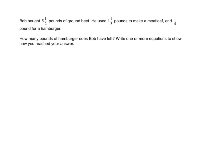We'll start with a tape diagram using the RDW. We've just read it, and now we're going to draw. We know that the whole amount is five and a half. So we bracket the whole diagram and label it five and a half. We know that he used one and one-third to make some meatloaf, and he used one quarter pound to make a hamburger. How much does he have left? We could write an equation several ways, but we'll start with the one that is most commonly used in my classroom.